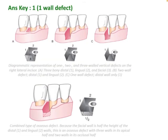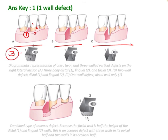This is a schematic diagram from Carranza. In the first image, 1 wall is missing and 3 walls are present, so this is a 3-wall defect.